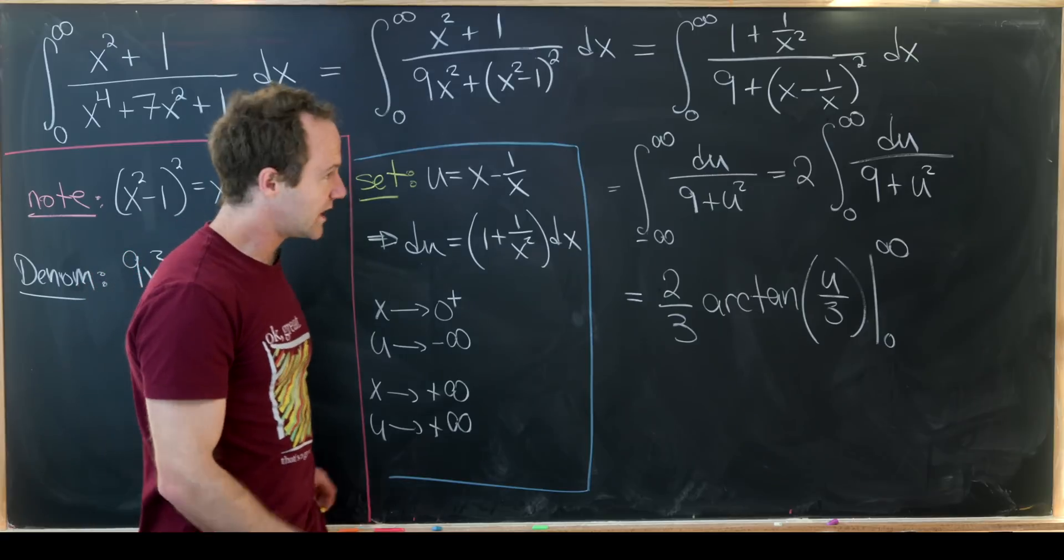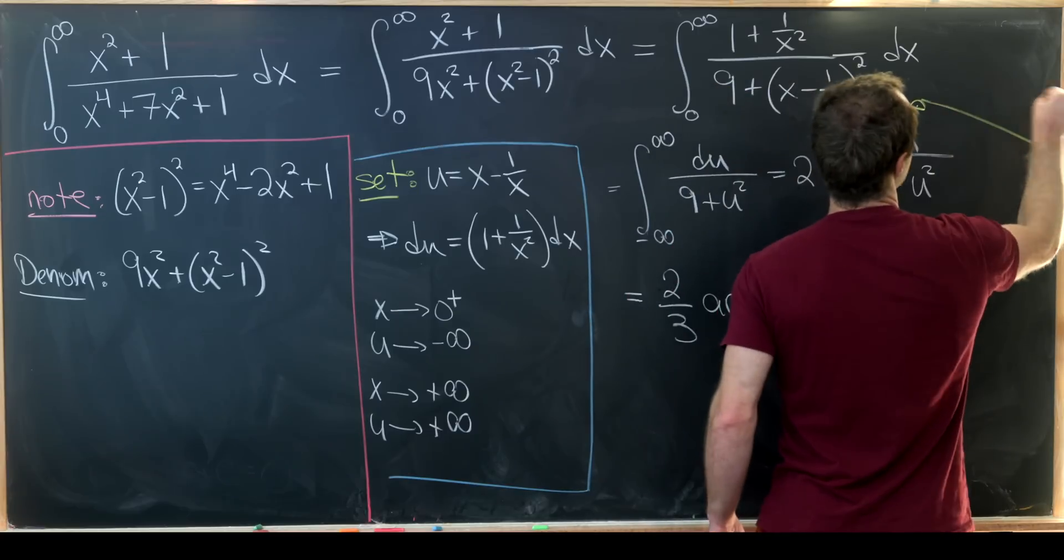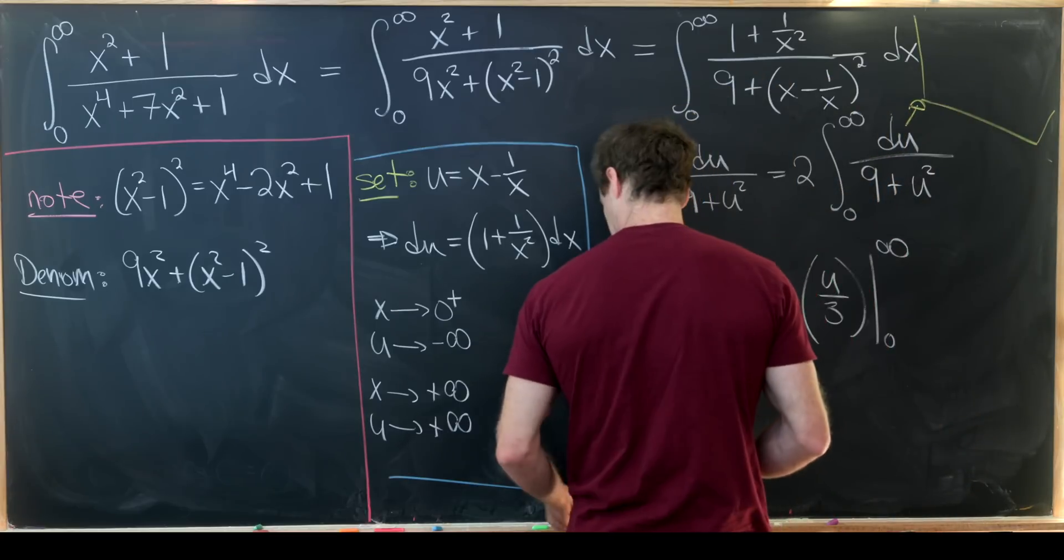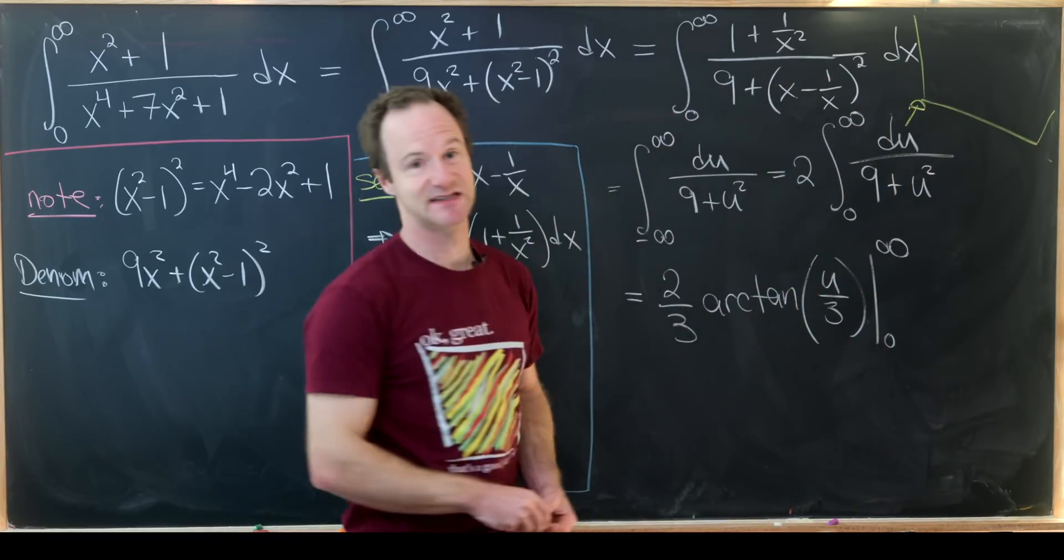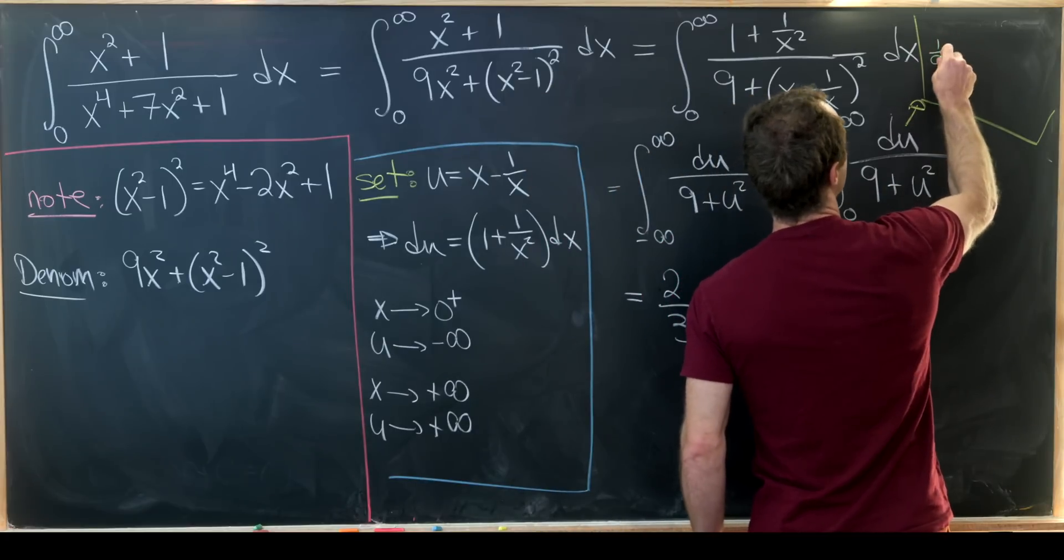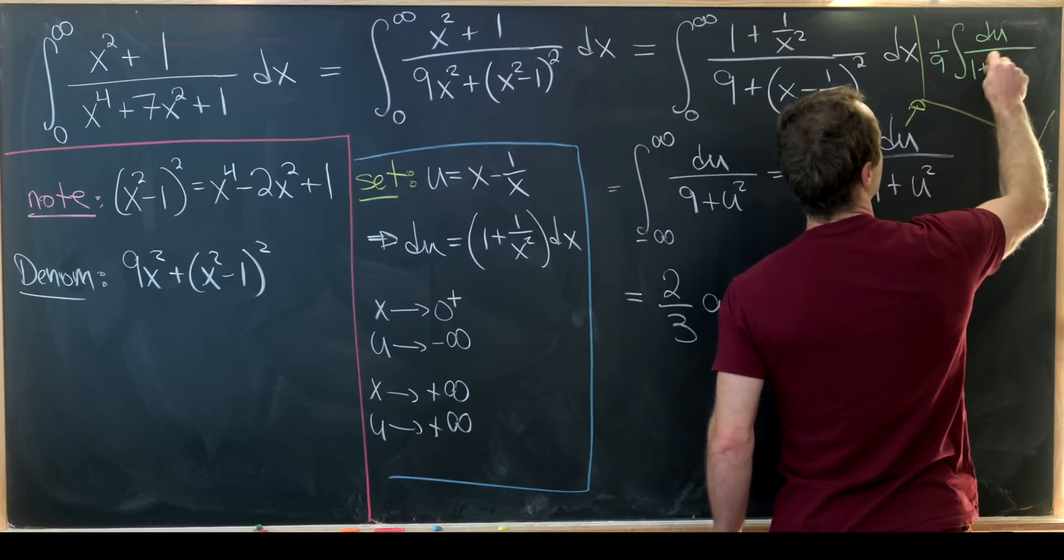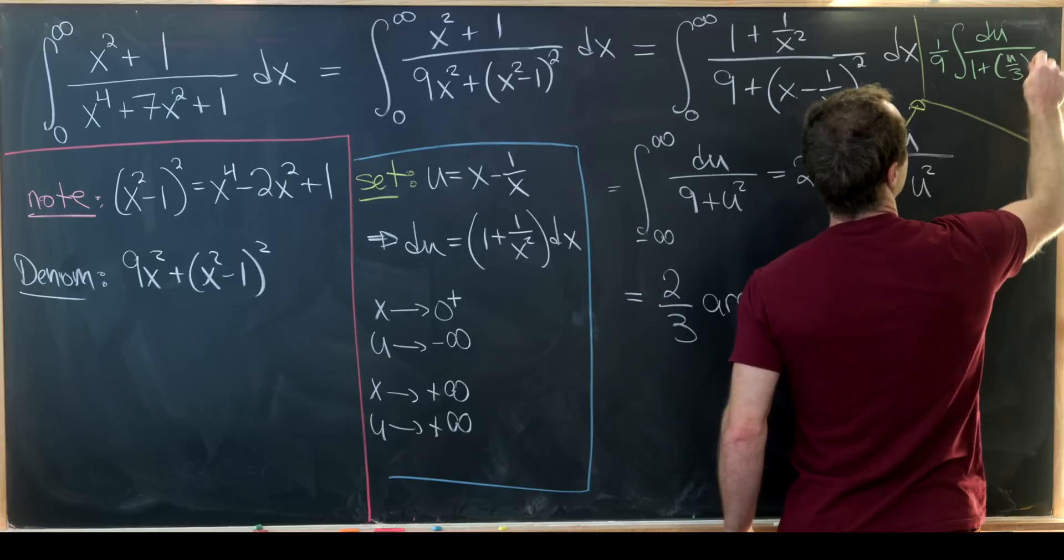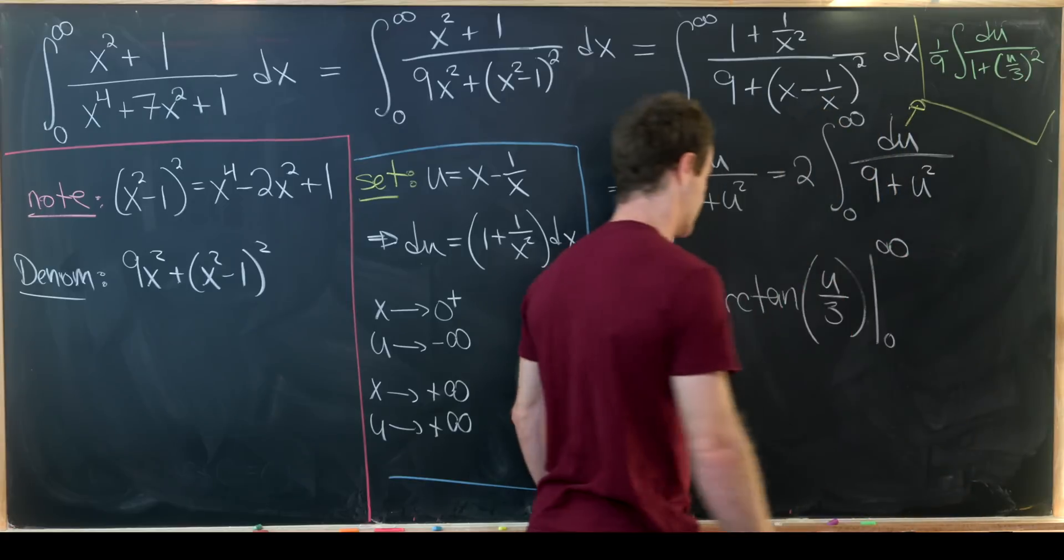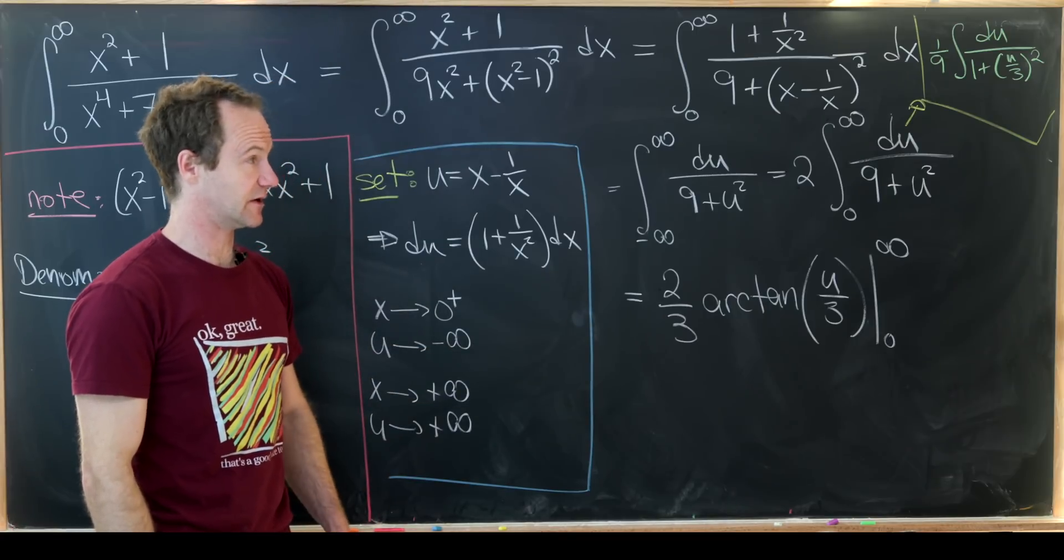If you want, you can do this with a bit of a substitution, although I don't think we really need to in this setting because this is kind of a standard antiderivative. But what you can do is factor a 9 out of the denominator and you're left with du over 1 plus u over 3 quantity squared. That's how all of those 3's end up in the denominator.